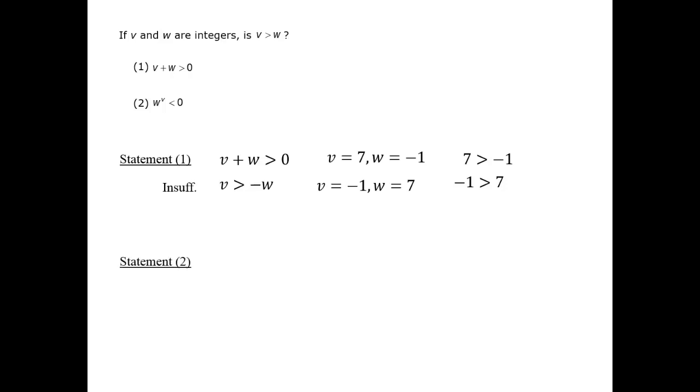Statement 2 tells us that w to the v power is negative. The only way that could happen is if w itself is negative. Therefore, this data statement allows our case in which v is 7 and w is minus 1.